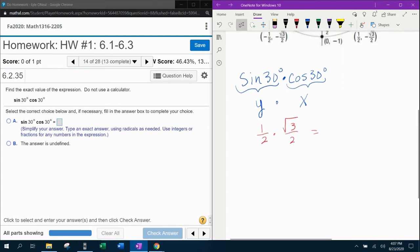And then we want to multiply those together. So to multiply fractions, you simply go straight across and that's going to give us square root of 3 over 4 as our final answer.